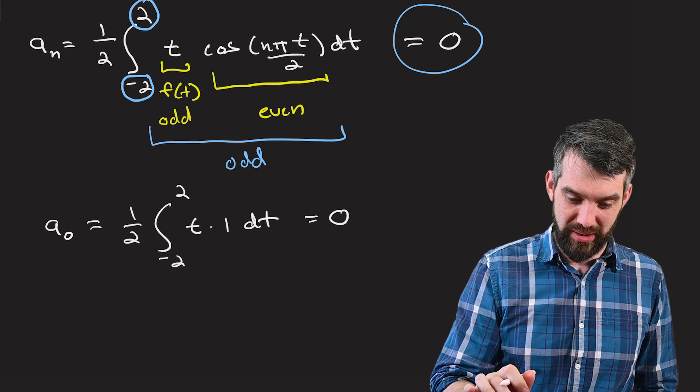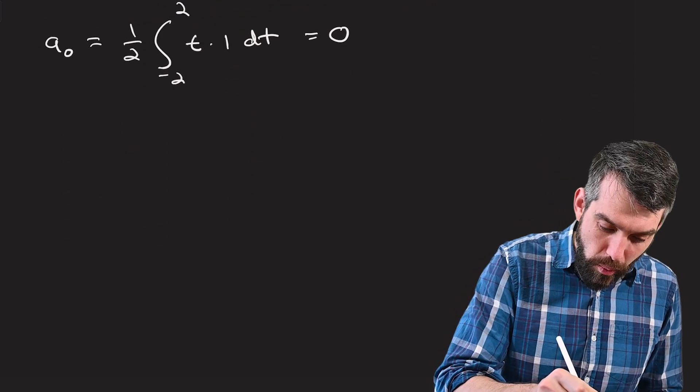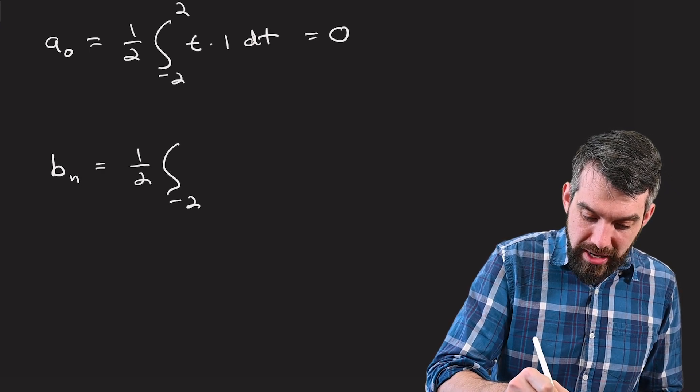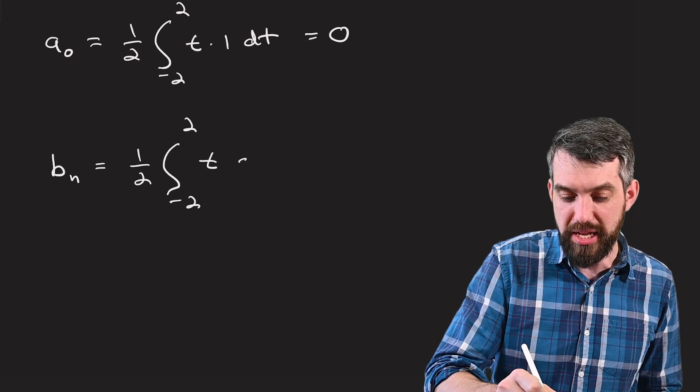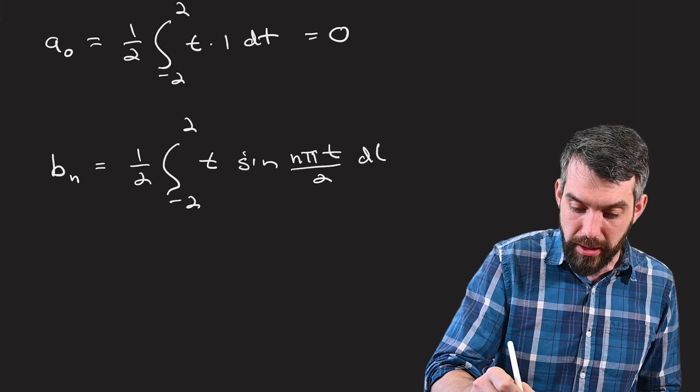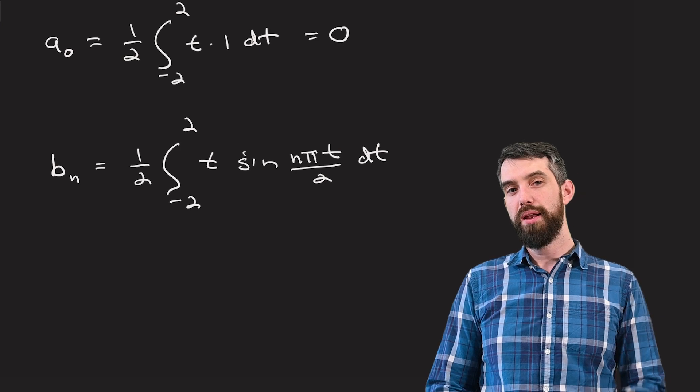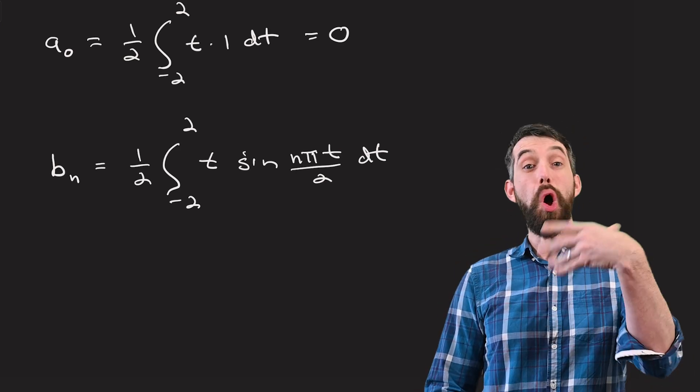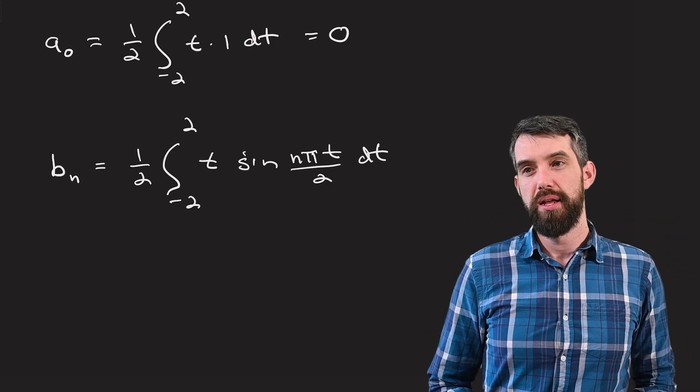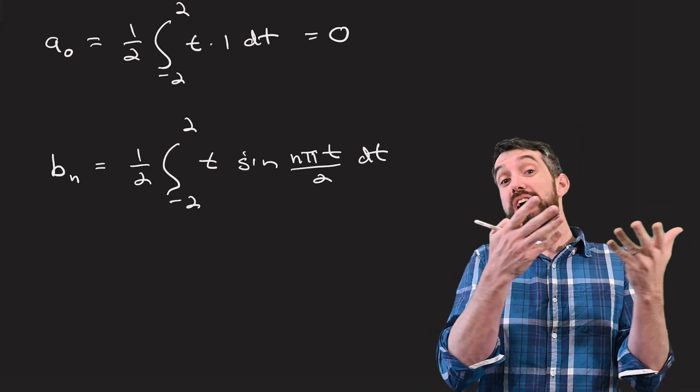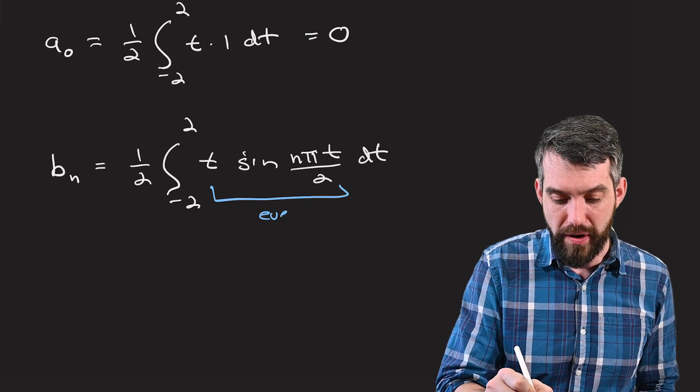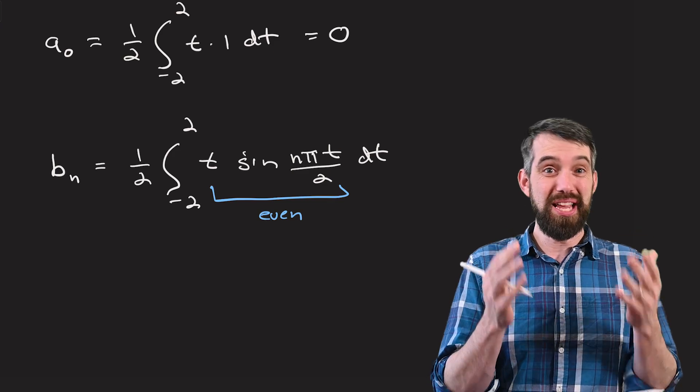Maybe everything's going to be 0. But let's be a little bit more careful. Let's look at what our b_n is going to be next. So 1 over l, which is 2, minus 2 up to 2, our function, which is t, but now sine of n pi t divided by 2 dt. Now I can't do the same trick. Sine is an odd function. Sine of minus x is the negative of sine of x. t is an odd function. And odd times an odd function is an even function. So this is an even function. So this doesn't cancel out to 0 because that same trick doesn't apply.